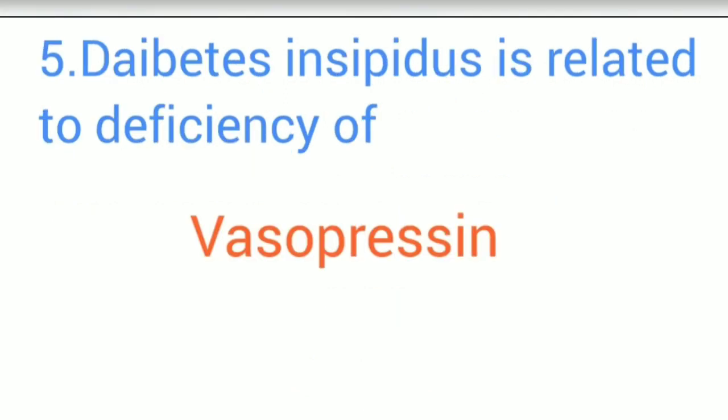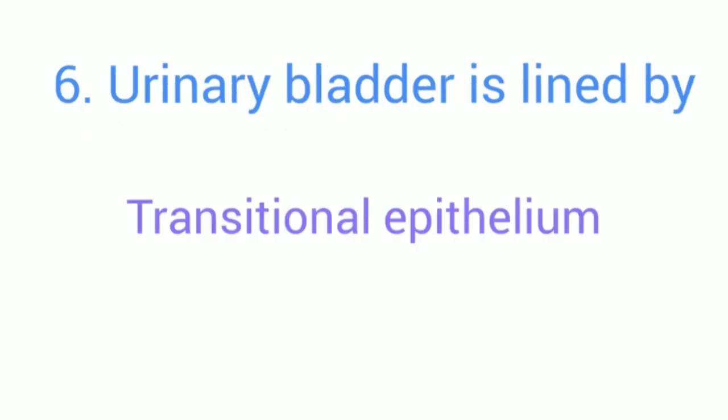Diabetes insipidus is related to the deficiency of vasopressin. The urinary bladder is lined by transitional epithelium.